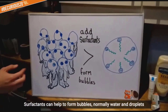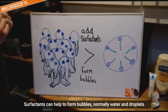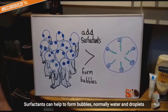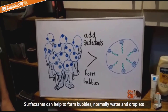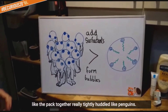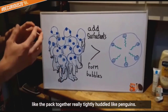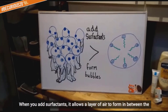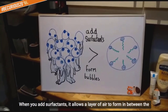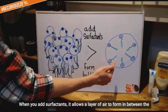Normally water droplets like to pack together really tightly — huddle like penguins — but when you add surfactants, it allows a layer of air to form in between the water molecules, and they arrange just like this.